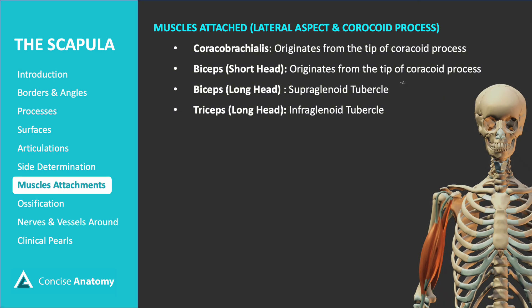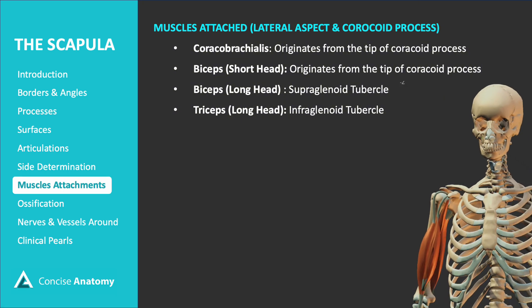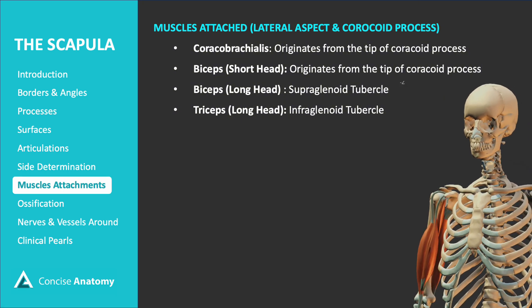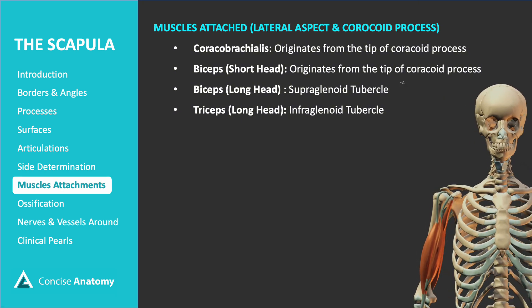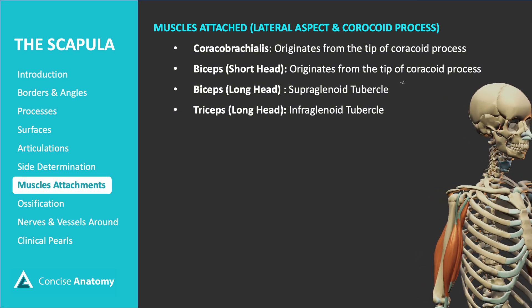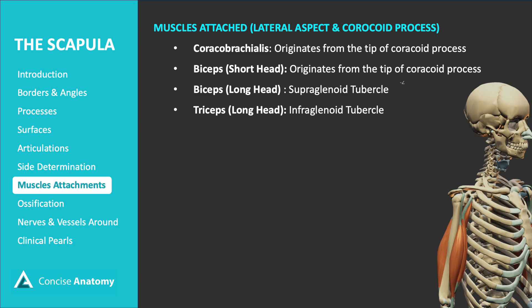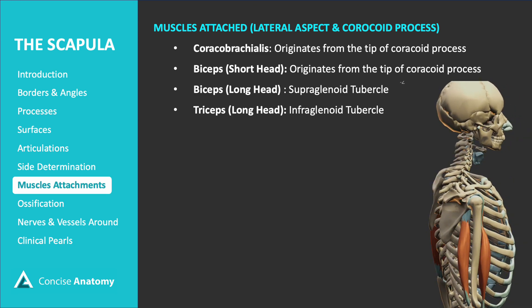Let's now have a look from the posterior aspect. You can now see all the muscular attachments near the glenoid fossa of the scapula.